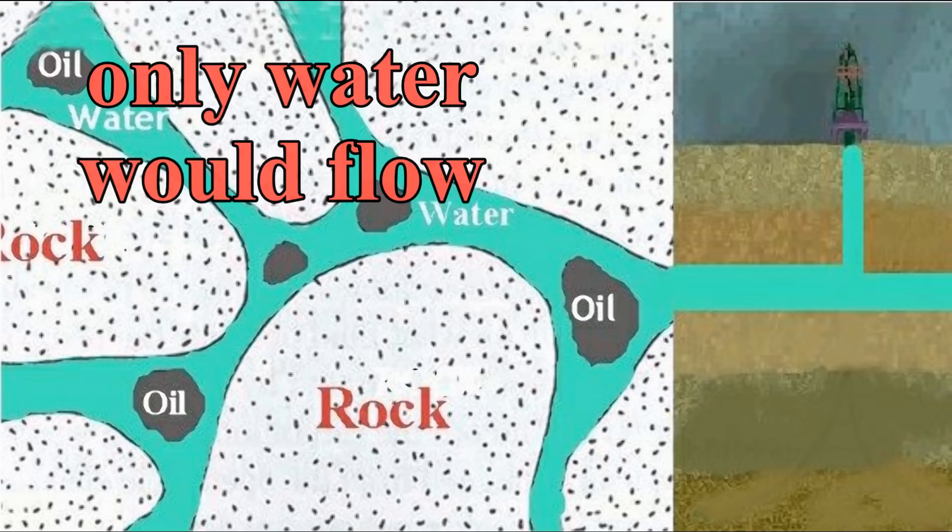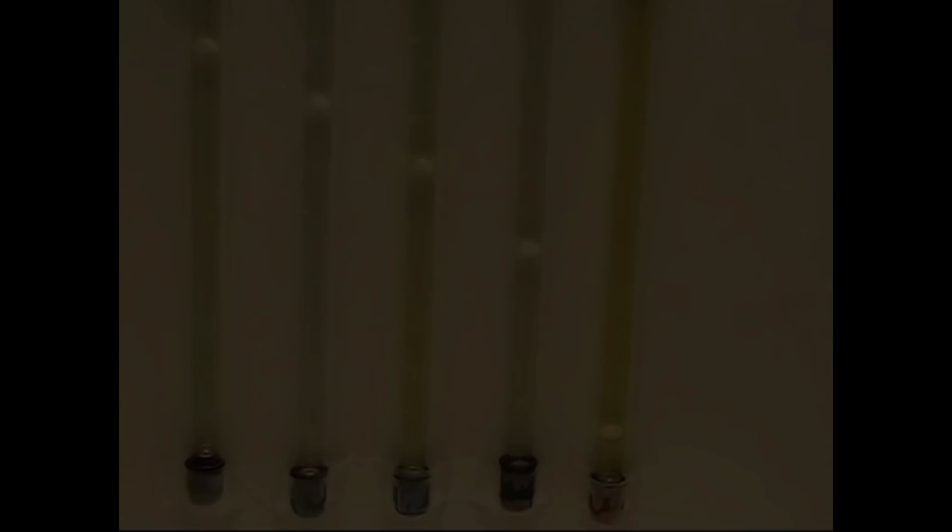Since every reservoir is a little different, we need to determine critical saturation for our particular reservoir. We do that by measuring the API gravity and viscosity of oil samples in the laboratory.